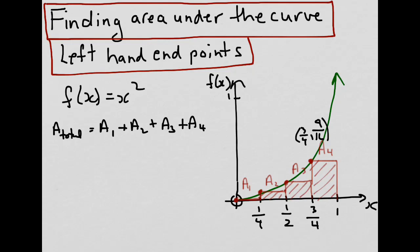Similarly, for the third endpoint for rectangle 3, we would have x being a half. Substitution into the function, we would end up with a quarter. And for the second endpoint, we would have x being a quarter, and substitution into the function would give f of x equals 1 sixteenth. And finally, for the last endpoint at the far left-hand side, this would be 0 and 0.